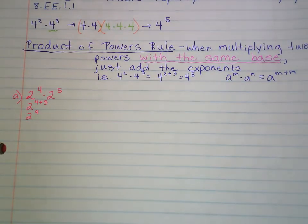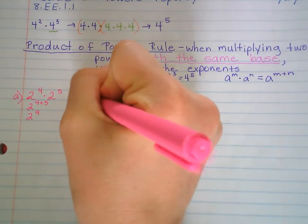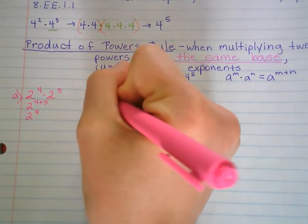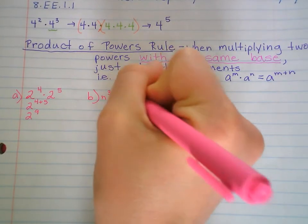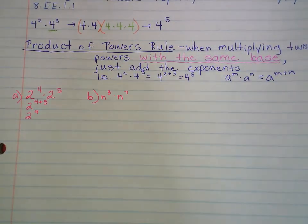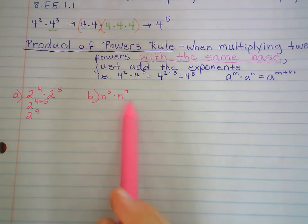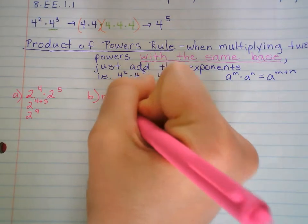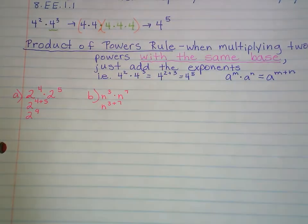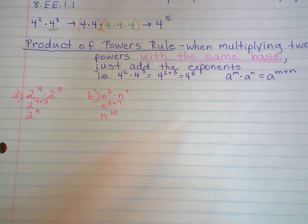Let's say we have n to the 3rd times n to the 7th. We're multiplying 2 powers with the same base, so we add the exponents: 3 plus 7. So it's n to the 10th.